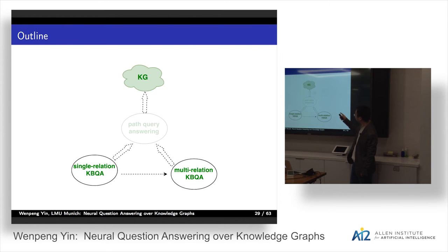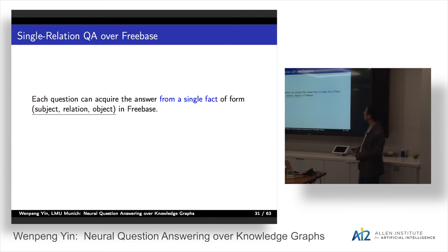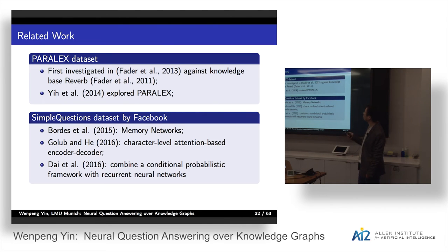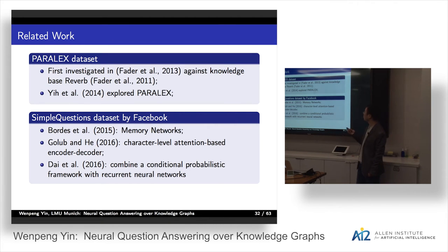We have finished path query answering. Now we go to factoid question answering over knowledge graphs, looking first at the single-relation task. Each question in this task requires an answer from a single fact from the knowledge graph. Even though it seems less challenging than multi-relation question answering, it's still far from solved. Facebook released a larger-scale single-relation dataset called SimpleQuestions, and the latest state-of-the-art uses deep neural networks.